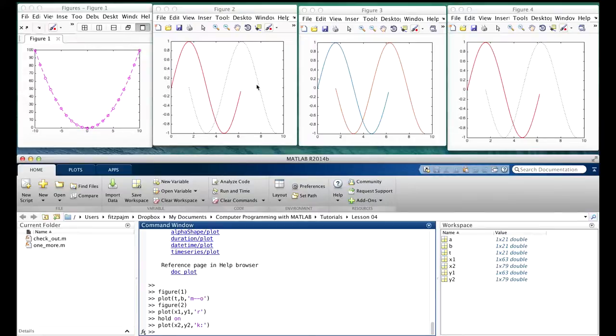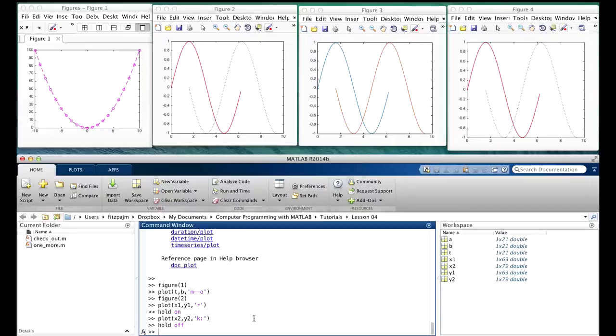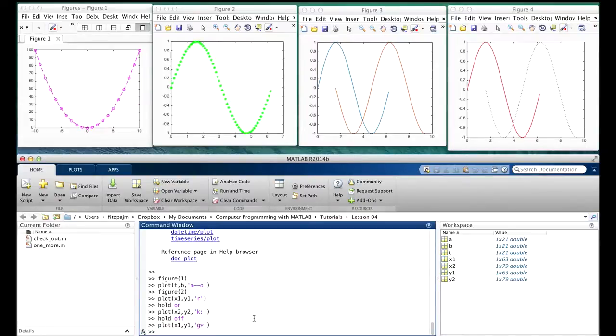When we're ready to replace the current plot in figure two with something else instead of adding to it, we give the command hold off. When the command hold off is issued, all subsequent calls to plot while figure two is active will replace the previous plot in that figure instead of adding to it. So watch figure two while I replot x1 and x2 with, I don't know, green asterisks. Hmm, that's a little garish.